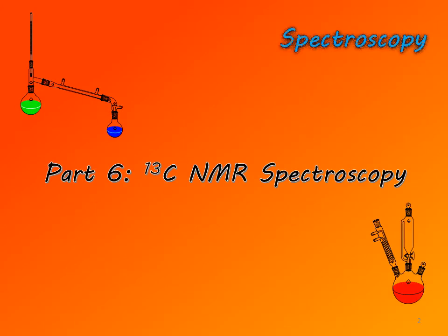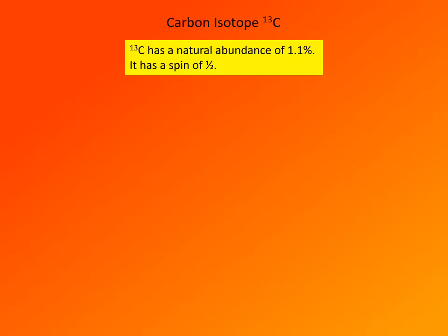In this video, we are going to look into carbon-13 NMR spectroscopy. Carbon-13 is an isotope of carbon that has a natural abundance of 1.1%. The most abundant isotope of carbon, carbon-12, is not magnetically active, and we cannot study it by NMR spectroscopy. So we are studying by NMR spectroscopy only 1% of carbon atoms. Carbon-13 isotope has a spin of 1.5, which is rather convenient because it gives first-order spectra — those that are relatively easy to interpret.